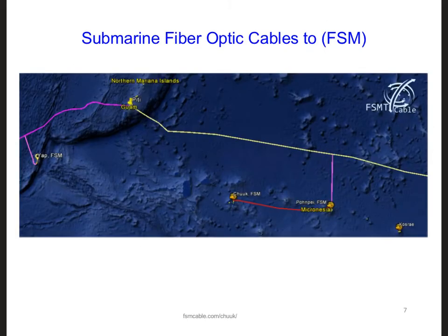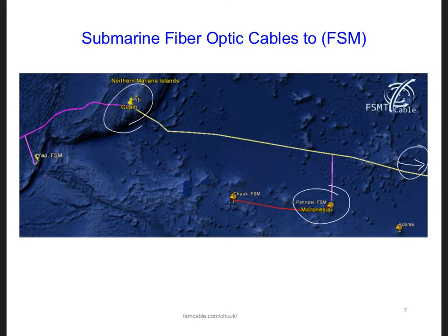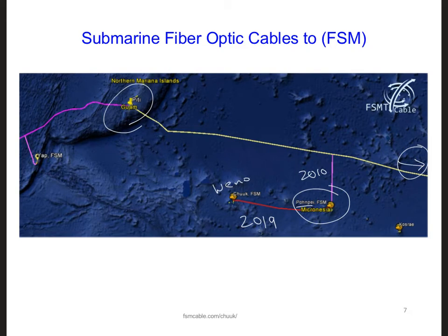On the map of global submarine fiber optic cables shown earlier, if we zoom in on FSM, we can see a cable going from Guam to the Kwajalein Atoll. In 2010, the first fiber optic cable was connected to an island on FSM — Pohnpei Island — giving it access to high-speed internet for the very first time. Then in April of 2019, a second island in FSM, Weno Island in the Chuuk state, was connected to high-speed internet when a submarine fiber optic cable was installed from Pohnpei to Chuuk.